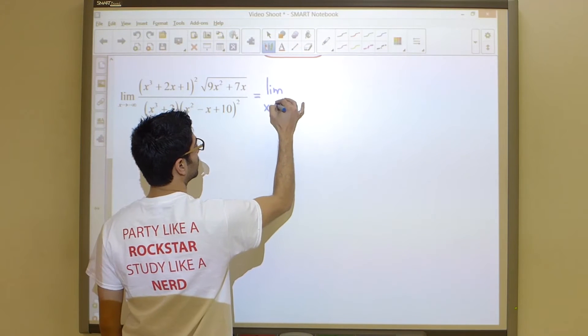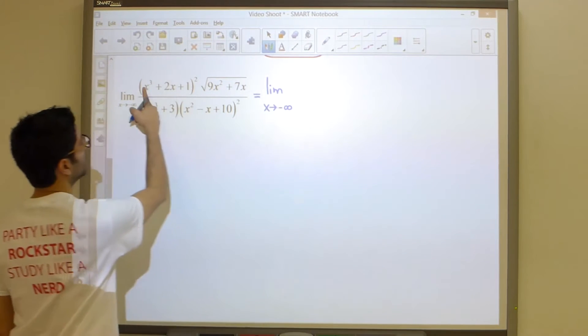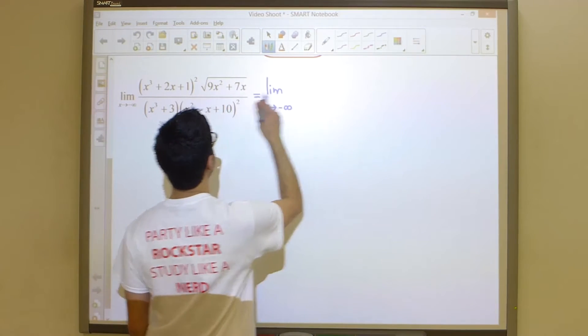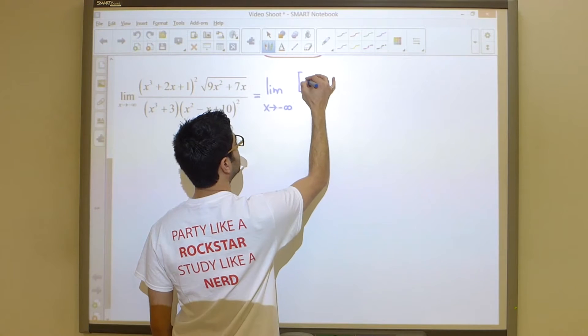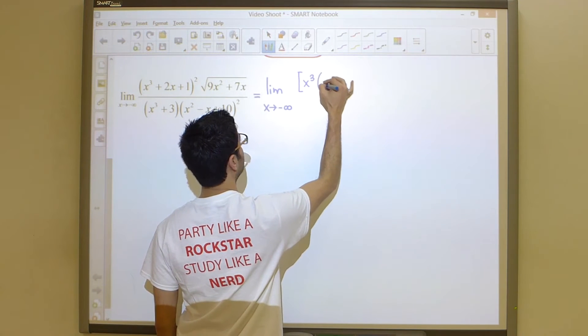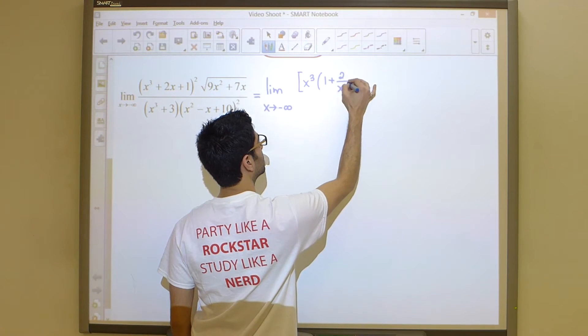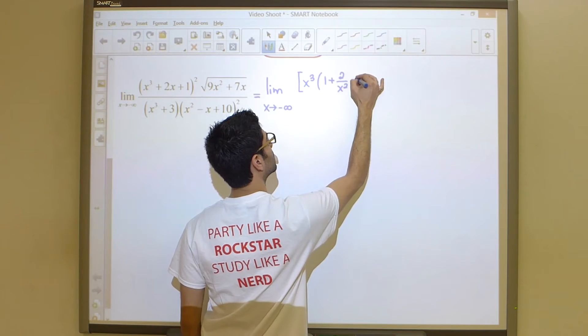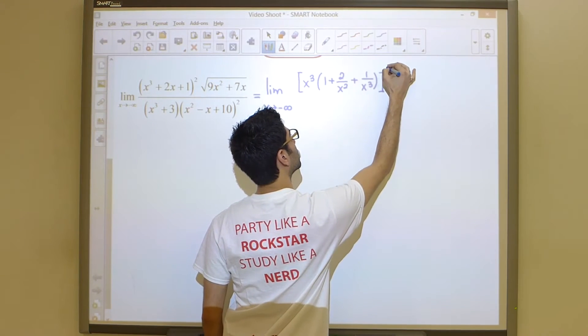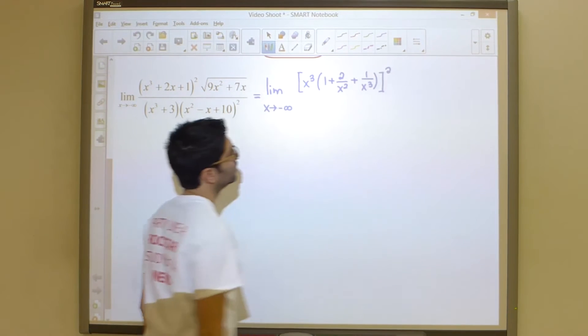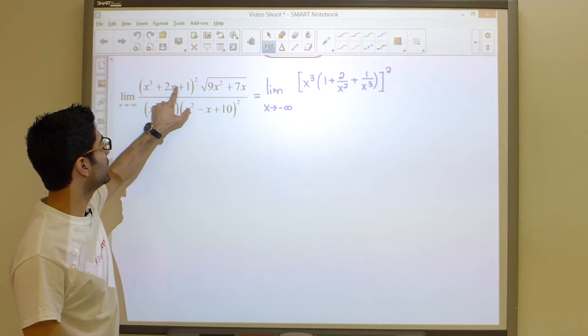So we have the limit as x goes to negative infinity. And in this term I'm going to pull out an x cubed, and since there's an outside power, I'm going to use these square brackets. If I pull it out, I am left with the following.